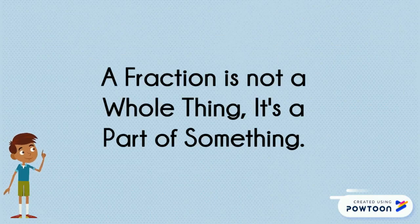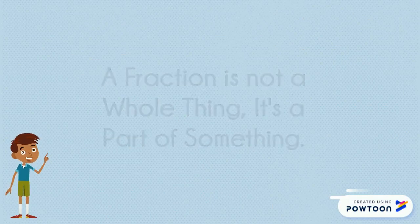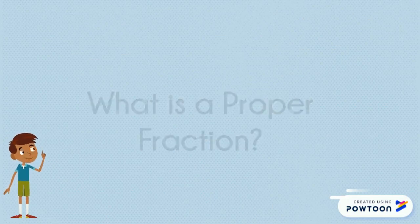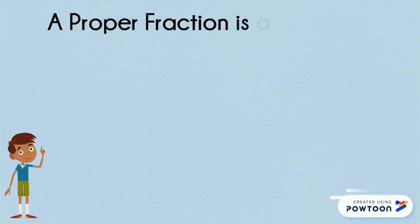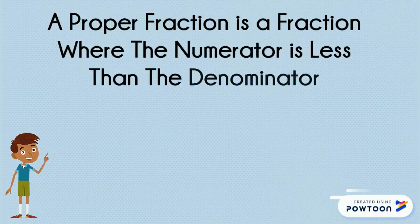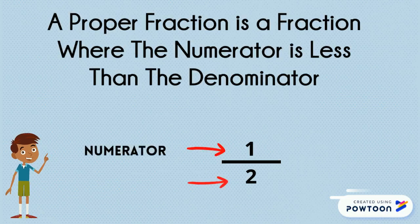A fraction is not a whole thing — it's a part of something. What is a proper fraction? A proper fraction is a fraction where the numerator is less than the denominator, such as 1 over 2. 1 is the numerator and 2 is the denominator.